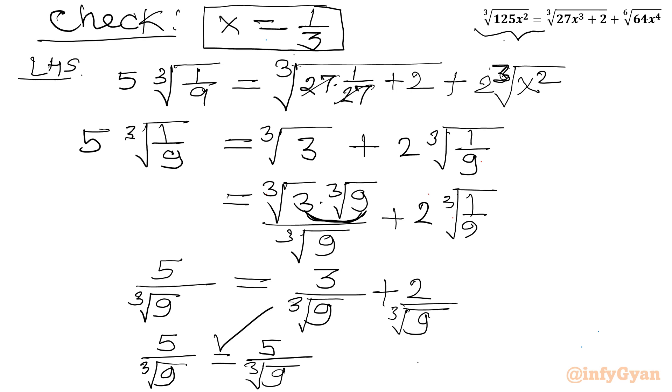So our final real solutions are x = 1/3, x = (1 plus root 3) over 3, and x = (1 minus root 3) over 3. This brings us to the end of this video, friends. Do not forget to like, share, and subscribe. Goodbye and take care!